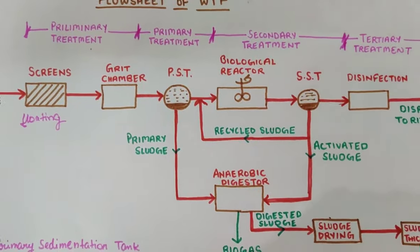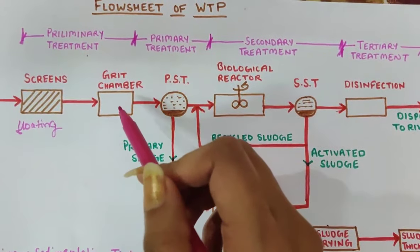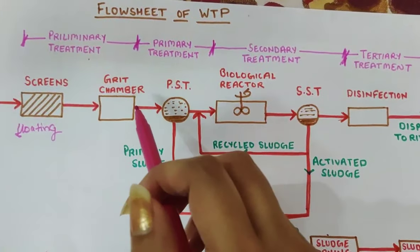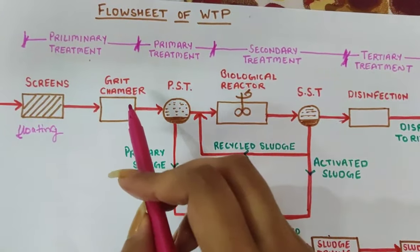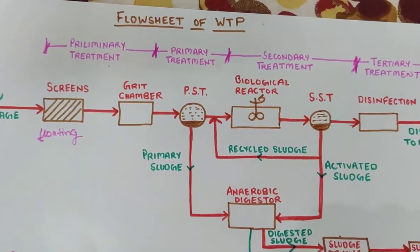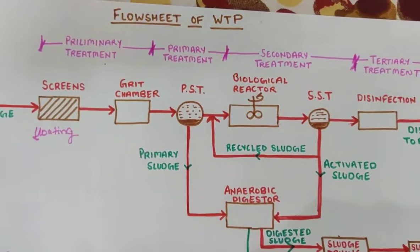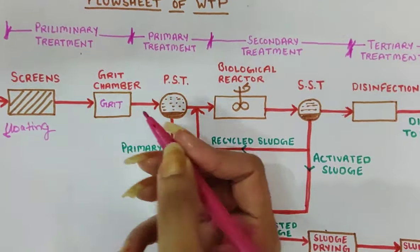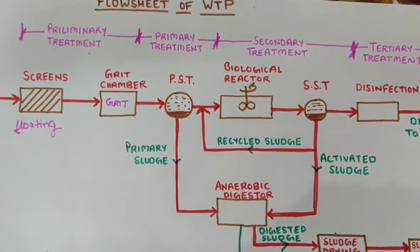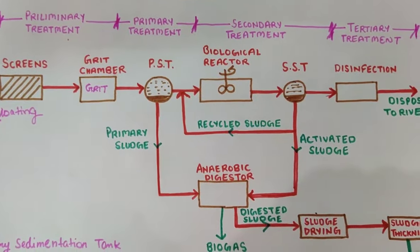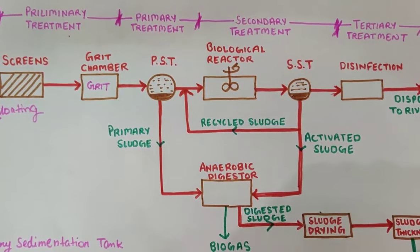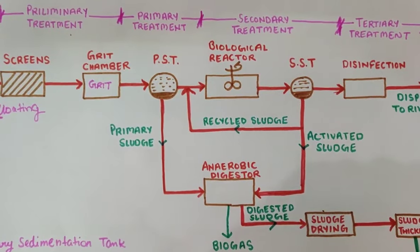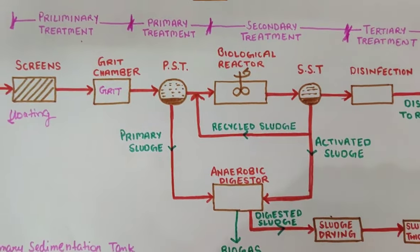After screening, we go to the grit chamber. The grit chamber works on the principle of sedimentation. It is a rectangular-shaped tank. The basic purpose is grit removal — that is, removal of inorganic materials. Grit means sand, silt, clay, gravel, etc. These are all inorganic materials, and we call them grit in short. The grit chamber will settle them down by the process of sedimentation.